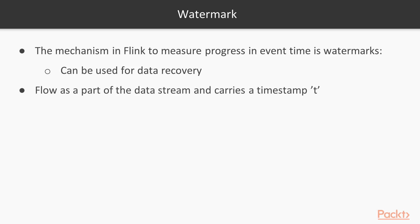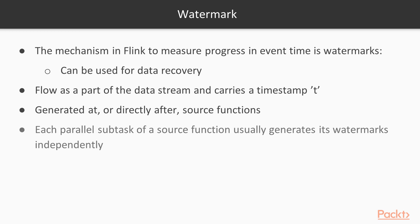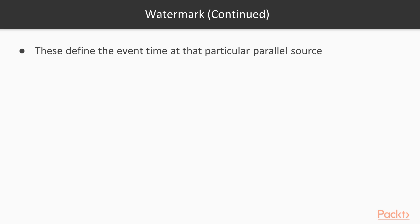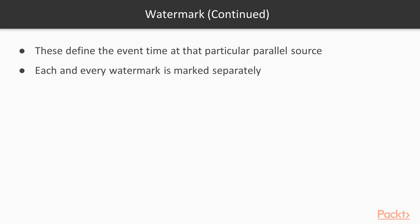Watermarks flow as part of the data stream and carry a timestamp T everywhere. You can generate watermarks at the source or in any function while processing. Each parallel sub-task of a function generates its own watermarks, defining the event time at that particular parallel source. Because Flink data stream processing is a very complex interconnected pipeline, you need a watermark at every step so that if something goes wrong, you know how to recover from any errors.